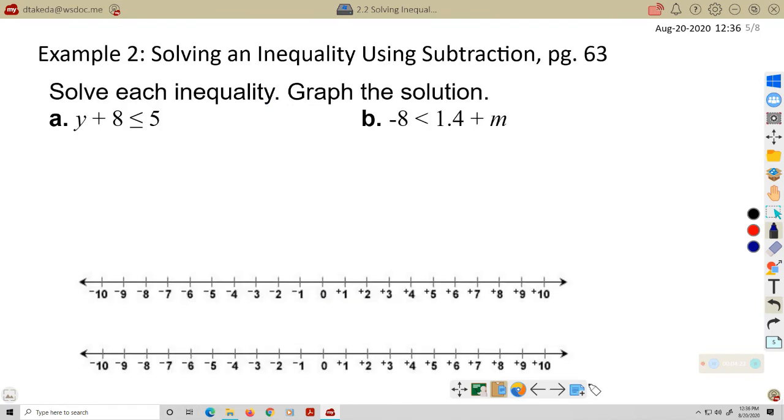All right. Let's take a look at some examples for subtraction property of inequality. These are on page 63 of your text. I start with an inequality. Y plus 8 is less than or equal to 5. I want to solve. I want to subtract 8 from both sides to make this side 0. So Y is less than or equal to negative 3. All right. So our boundary is here at negative 3. I want to color that in as a solid dot because I want Y to be equal to negative 3, which it is. And then the numbers that are less than negative 3 over here to the left of negative 3.